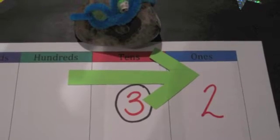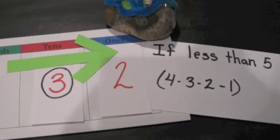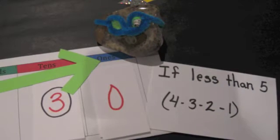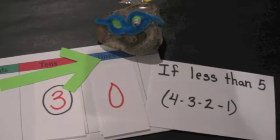Next, we look at the digit to the right. In this case it is a two. And if the digit is less than five, you do not change the circled digit. Instead, you replace all of the digits after the circled digit with zeros. So our 32 becomes 30.